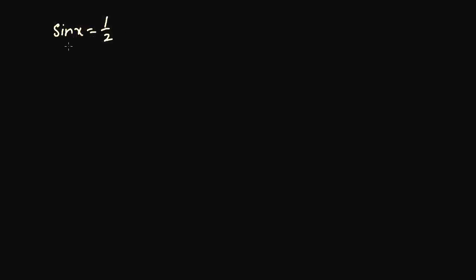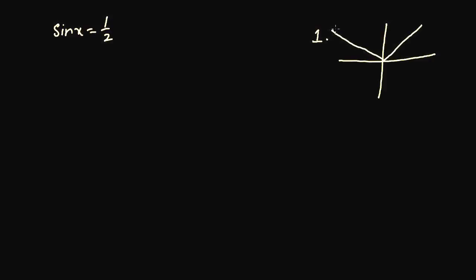Suppose you have to solve sin x equals one half. The first thing to understand is that it's an arbitrary angle, not a right angle triangle angle. Step one: find the quadrant. In the first quadrant, everything is positive, so sin x is positive there. There is also another quadrant where only sin is positive, which is the second quadrant. Remember CAST — so it would fall into two quadrants.